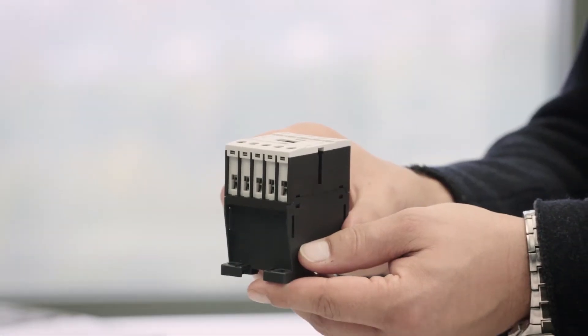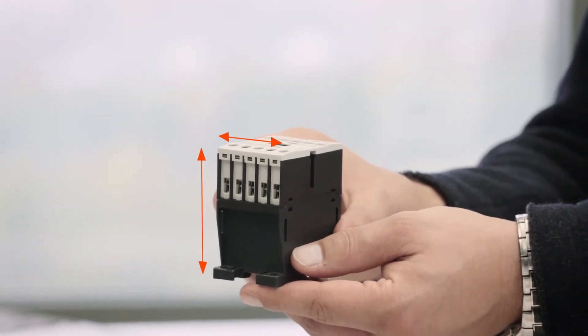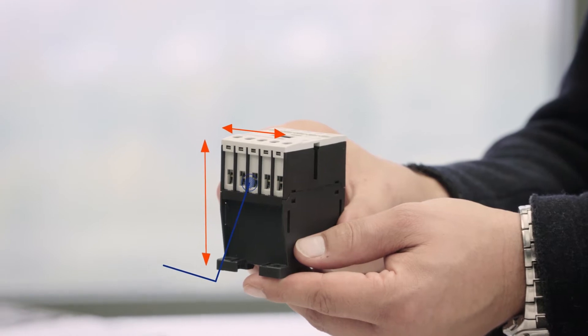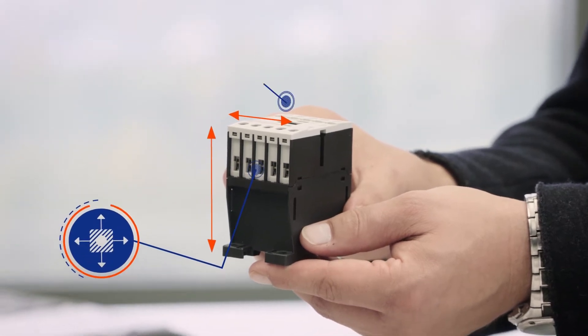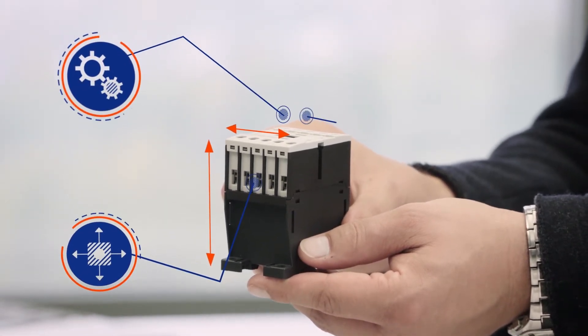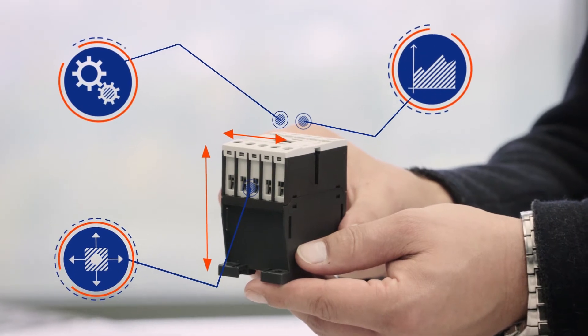Take for example a simple power contactor. The complexity and depth of information needed is obvious. The planner needs to know the product dimensions, the positions of the terminals, the different functions, the performance data and much much more.